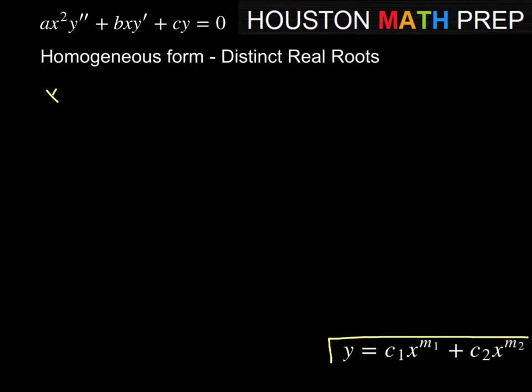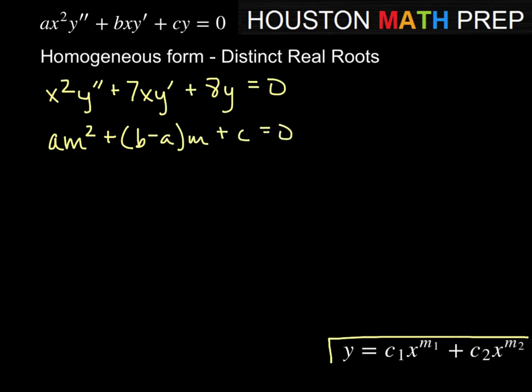Here we'll just look at an example. Let's say x squared y double prime plus 7xy prime plus 8y equals zero. So remember, the auxiliary equation is am squared plus b minus a times m plus c equal to zero. Based on this equation, we have a equals 1, b equals 7, and c equals 8.